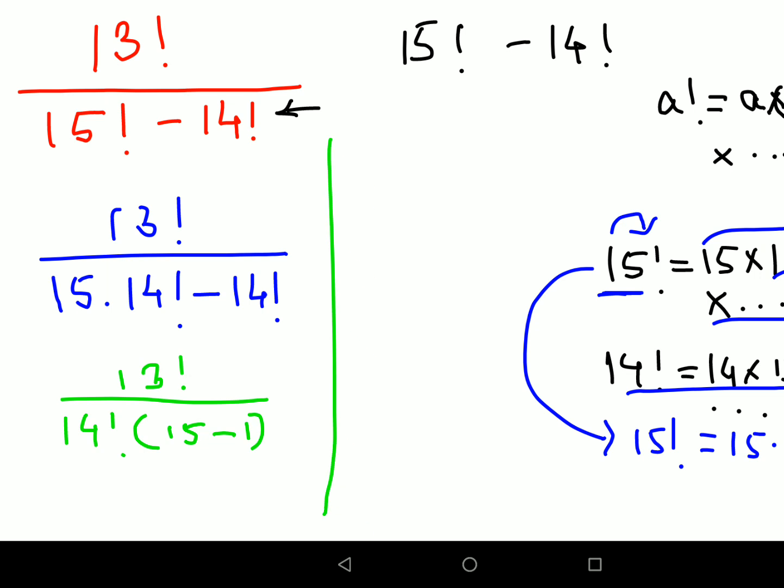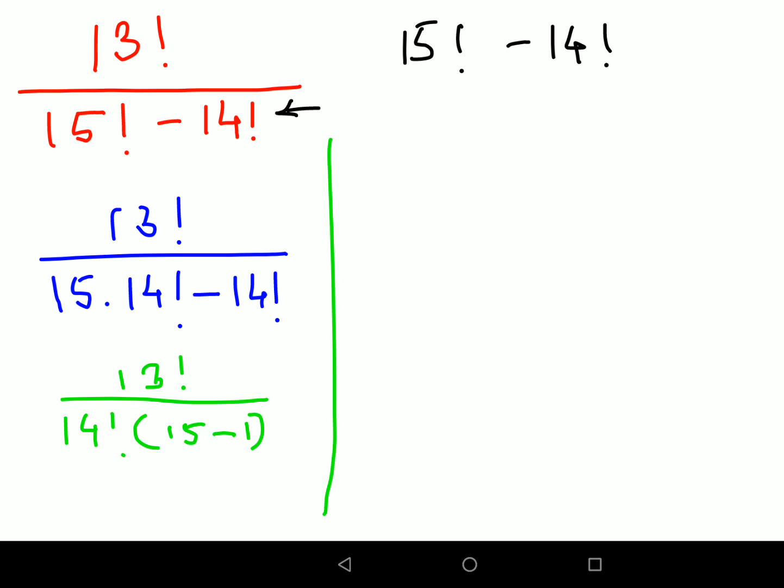Next step, we will keep the 13 factorial as it is, and instead of 14 factorial I can write this as 14 into 13 factorial. Just as 15 can be written as 15 into 14 factorial, I can write 14 as 14 into 13 factorial, and this bracket is 15 minus 1 which is getting multiplied by 14 itself.